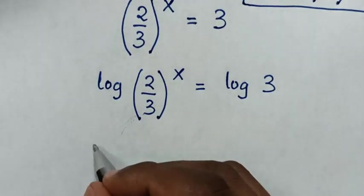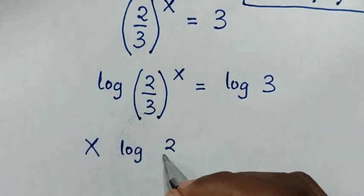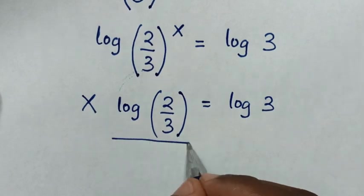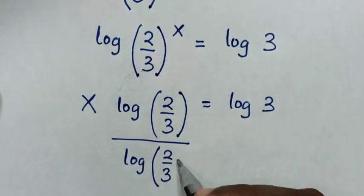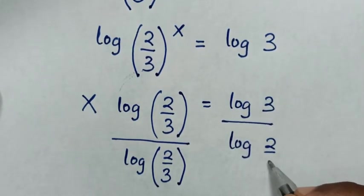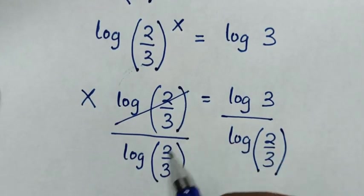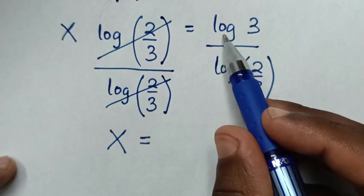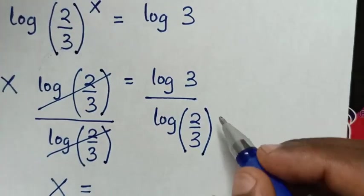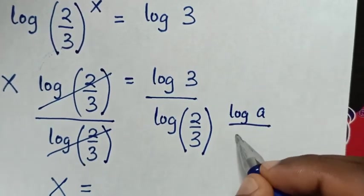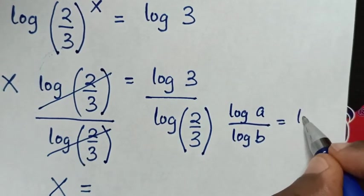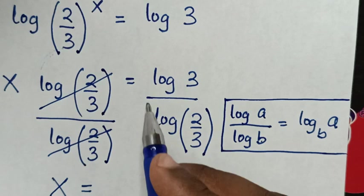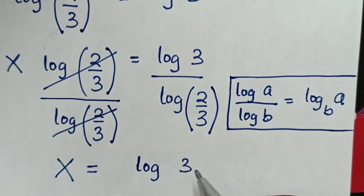Then we'll divide by log of 2 over 3 on both sides. This and this will cancel. Then it will be x is equal to, from this division of log of 3 over log of 2 over 3, we'll apply the logarithmic rule: log of a over log of b equals log base b of a.